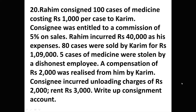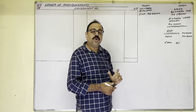Let us see the question first. Raheem consigned 100 cases of medicine costing ₹1,000 per case to Karim. The consignee was entitled to a commission of 5% on sales. Raheem incurred ₹40,000 as his expenses. 80 cases were sold by Karim for ₹1,09,000. Five cases of medicine were stolen by a dishonest employee; a compensation of ₹2,000 was realized from him by Karim. Consignee incurred unloading charges of ₹2,000 and rent ₹3,000. Prepare the consignment account.